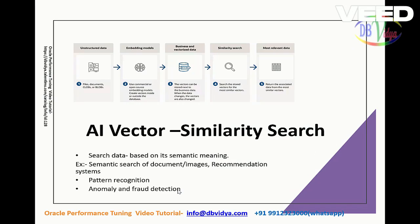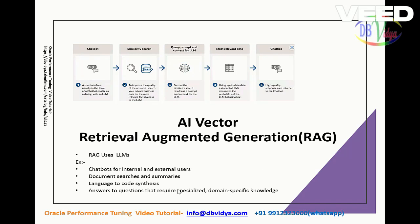The next feature is AI vector search. Under AI vector search, there are two types of searches. The first is similarity search, which is useful for semantic search of documents, images, and social media — a lot of different types of data. The second is retrieval augmented generation, or RAG. This uses large language models and can be used for chatbots for internal and external users, as well as many document searches.